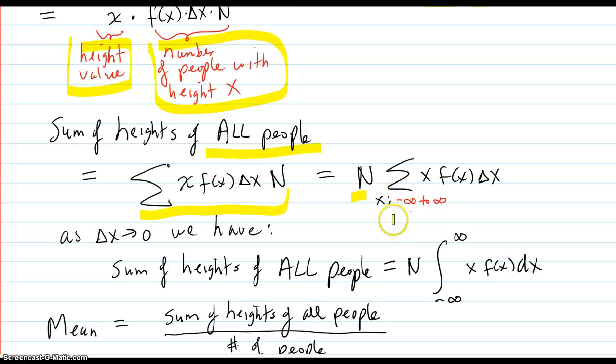And I can factor out that N. And that sum is going to go over all the x values from negative infinity to infinity. Now, of course, nobody has negative height. So this density function would be structured such that it was zero all the way up to the smallest value height and zero after the largest value height.